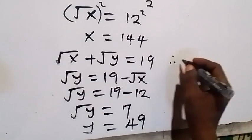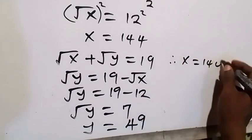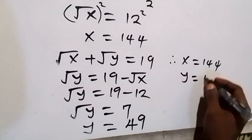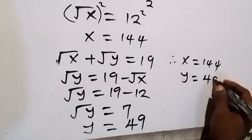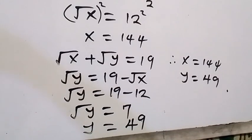Therefore, x equals 144 and y equals 49. We can also check by substituting the values back into the original equations. Thank you for watching — don't forget to subscribe so you don't miss any of our videos. See you in the next class, bye for now.